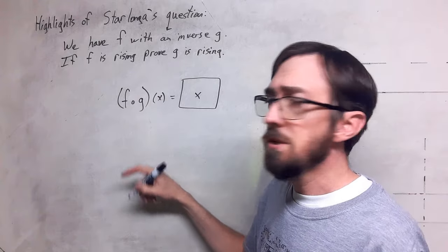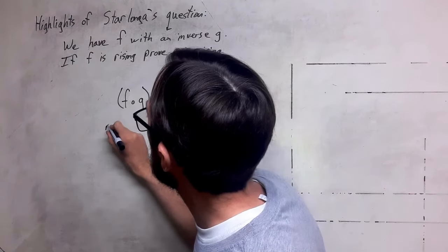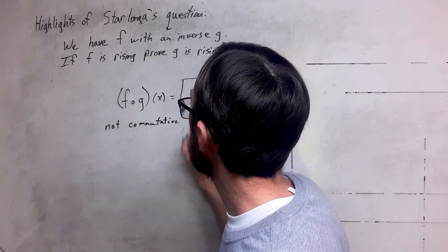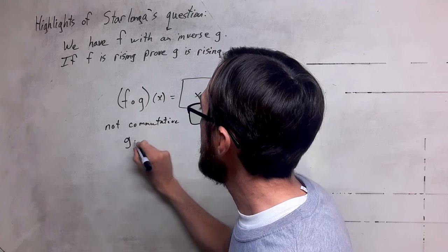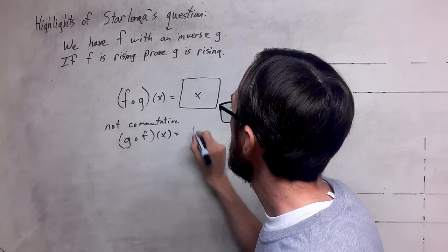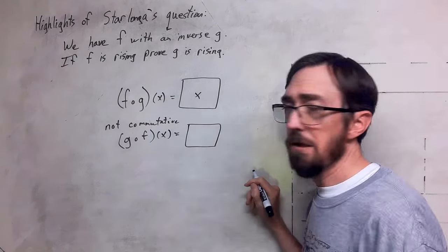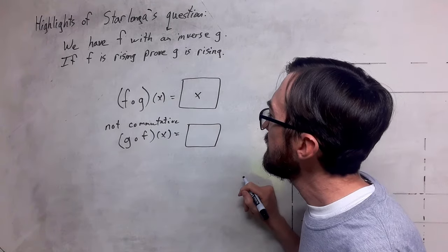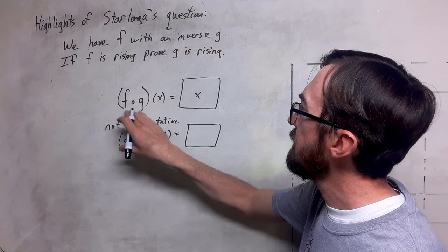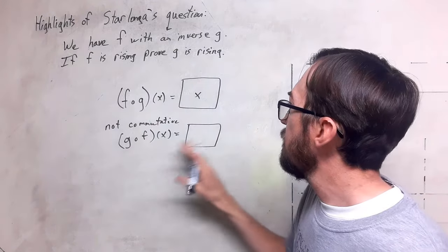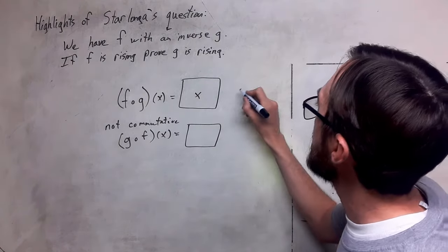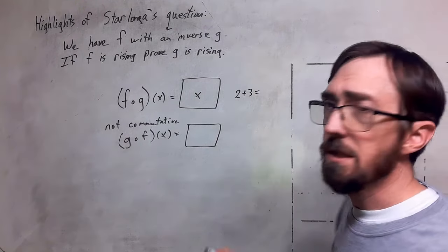But if you've studied composition, then you know that this is not commutative. And what we mean by that is that if we literally commute these functions, that the result here could be different from here. That's what we mean by non-commutative. If these were commutative with this operation, then it wouldn't matter what order we put them in, we would get the same result.